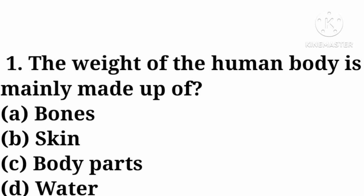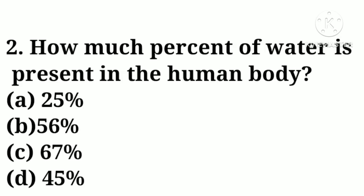Question number one: the weight of the human body is mainly made up of — option A: bones, option B: skin, option C: body parts, option D: water. Correct answer: option D, water. Question number two: how much percent of water is present in the human body — option A: 25, option B: 56.